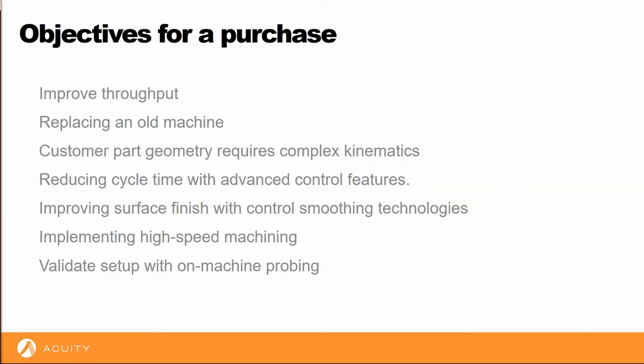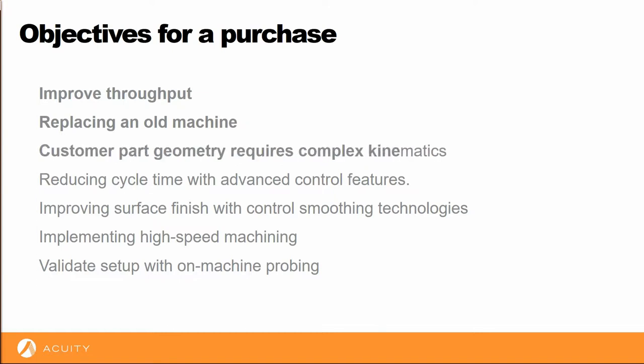There are many possible objectives for a machine tool purchase. We'll list a few examples here. You may wish to increase the throughput of your shop and simply need more spindles. You may be replacing an older machine, as high maintenance costs can no longer justify its continued service. Perhaps you are considering more complex parts and require a full 5-axis machine.